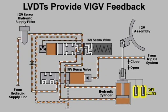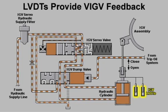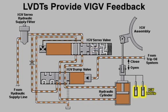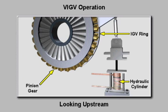When the commanded IGV angle and the actual IGV angle are the same, the control system resets the IGV servo valve to its null position. Actuation of the inlet guide vane ring by the hydraulic cylinder pivots the guide vanes about their mounts and increases or decreases the effective inlet area of the compressor.